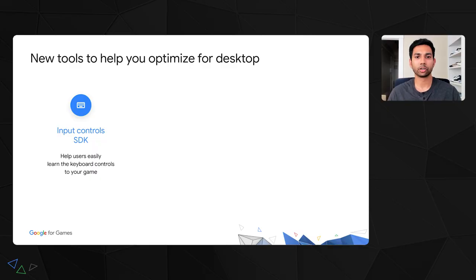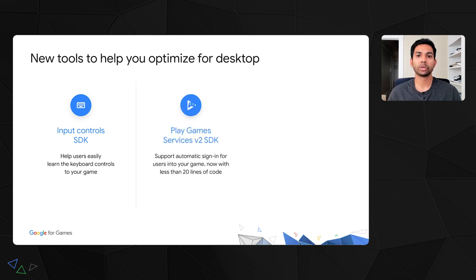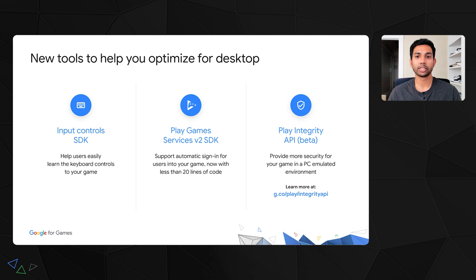We've also created a number of tools to make it easier to optimize your game. First, we've developed a lightweight input controls SDK to help you share controls with players through our in-game menu. Second, we have an updated Play Game Services SDK to support continuity of play between devices — with our updated V2 SDK, you can support automatic sign-in with just a few lines of code. Lastly, we have a new Play Integrity API currently available in beta, which helps you detect attempts to cheat or tamper with your game on PC and ensure it's only running in the environments you publish to.